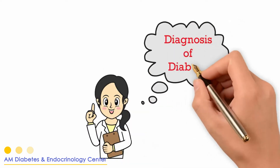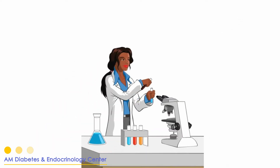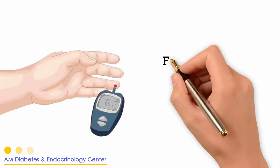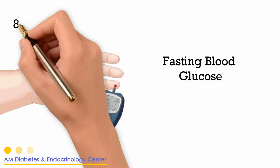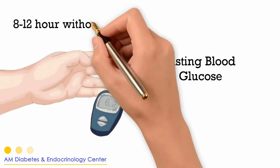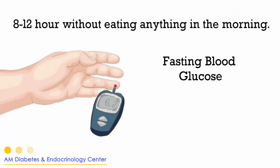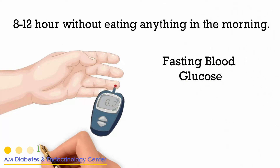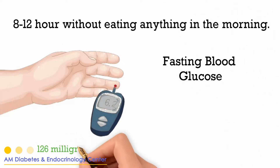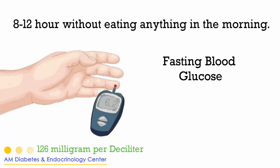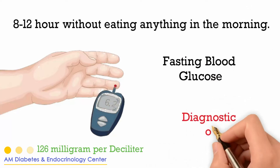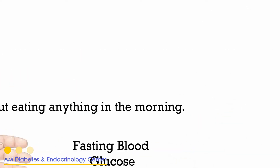Diagnosis of diabetes is made by one of the following lab tests. 1. Fasting blood glucose, done after an overnight fast. A glucose level over 126 mg per deciliter, done on three different occasions, is diagnostic of diabetes.